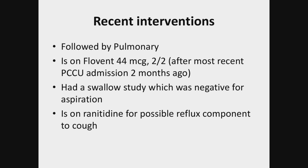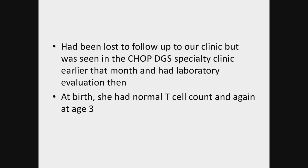She is on ranitidine for acid suppression, on Flovent two puffs twice a day, and currently on ceftriaxone for treatment of presumed community-acquired pneumonia. She has no significant family history — her mom gets frequent sinus infections, but both parents were tested and neither carry the mutation. Her two older siblings are healthy. On her previous admission, our pulmonary team started her on low-dose inhaled corticosteroid for a possible asthma phenotype and placed her on ranitidine for possible reflux contributing to her chronic wet-sounding cough. A swallow study was negative for aspiration.